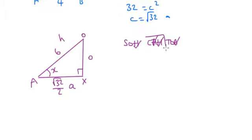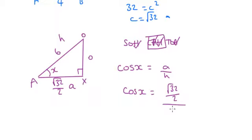So we're going to use CA, or Cos. So that's cos(X) equals adjacent over hypotenuse, which is √32 divided by 2, all divided by 6.